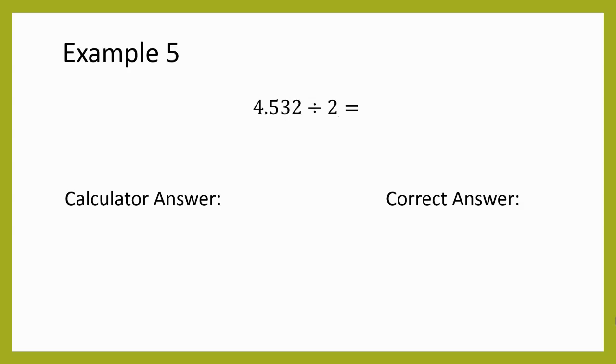My last example, 4.532 divided by two. So I'm going to go ahead, get my calculator answer, 2.266. And then again, I think about sig figs. So 4.532, all of those digits are significant. So I have four sig figs in my first value. My second one, I only have one digit, so I only have one sig fig. So I'm going to round my answer to one significant figure, meaning two.